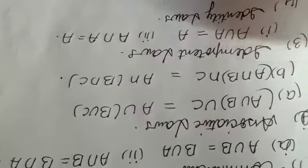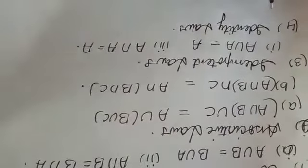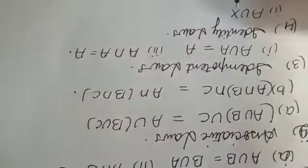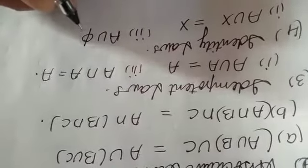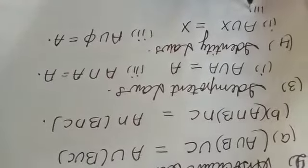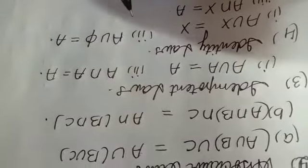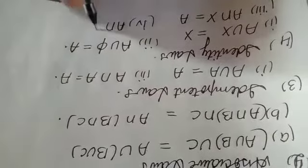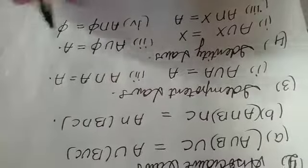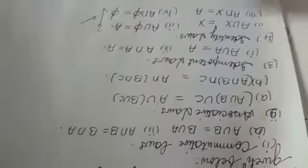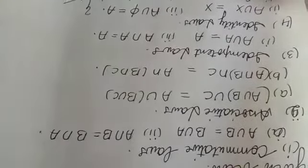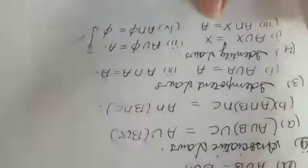All these concepts are used not only in set theory but also in probability, so pay attention. Identity law says: A union X (universal set) always gives X. A union φ (empty set) gives A. A intersection X gives A. A intersection φ gives φ. So: A union X = X, A union φ = A, A intersection φ = φ, and A intersection X = A.